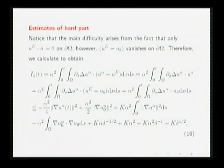When we estimate i1, notice that the main difficulty arises from the fact that only the normal component of u, the Euler equation, vanishes on the boundary. But the tangential component of Euler might not vanish on the boundary. However, the Euler equation minus the boundary correction function must vanish on the boundary. Therefore,